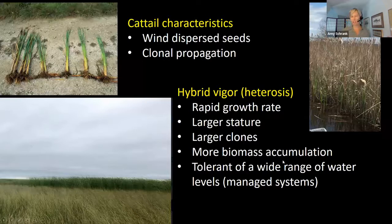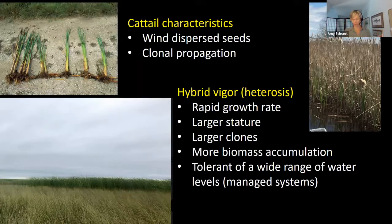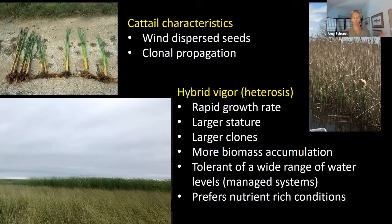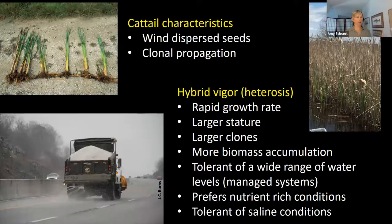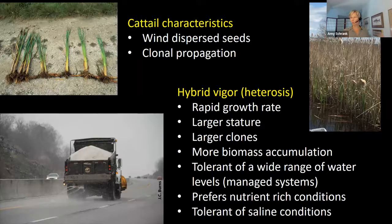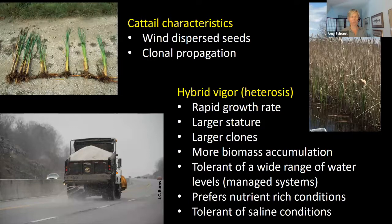We have made conditions really nice for hybrid cattail. They are tolerant of a wider range of water levels than either parent species, so as we manage water levels, hybrid cattail is happy. Like most cattail species, it prefers nutrient-rich conditions, which we provide frequently. They're also tolerant of saline conditions, so as we add road salt to our environment in winter, hybrid cattail can actually do pretty well. You can see that it's sort of primed to take over.